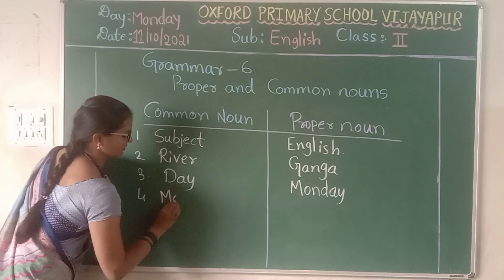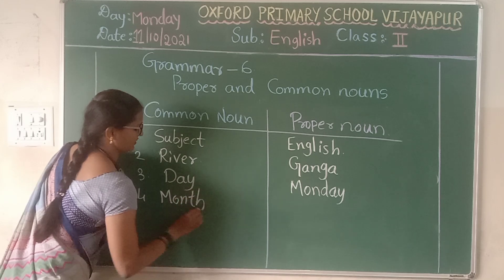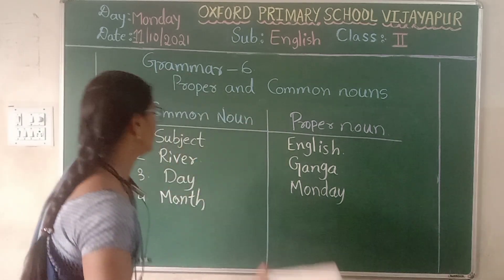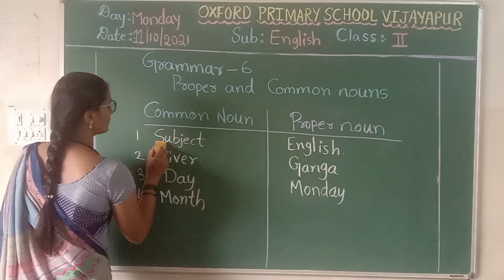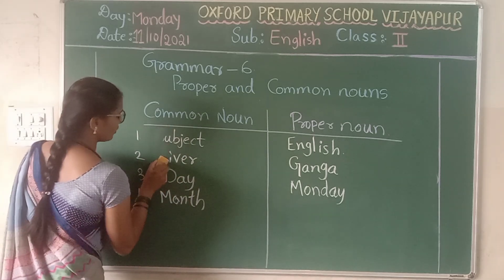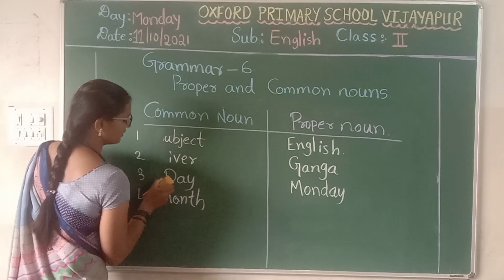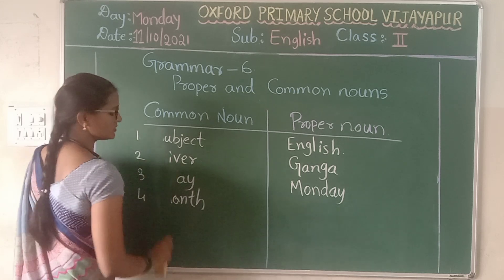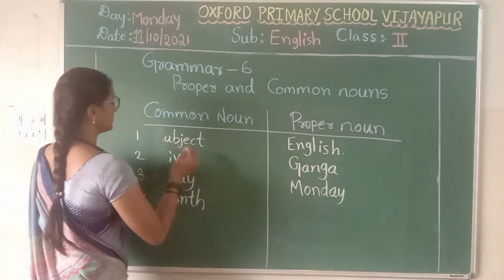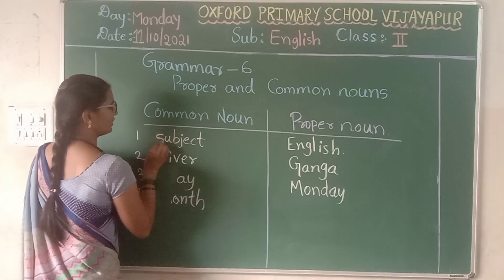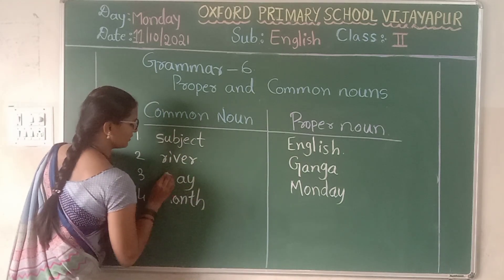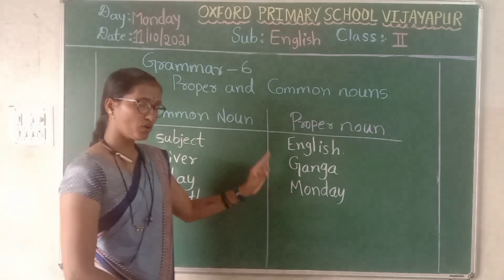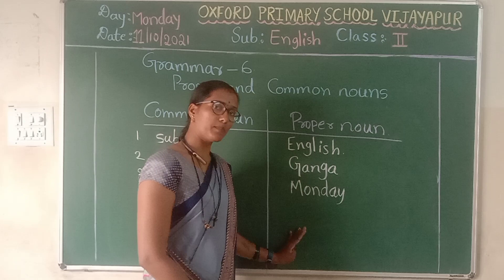Let us say 'month.' Now, all these common noun words start with small letters — don't get confused. Proper nouns always begin with a capital letter. But common nouns are not proper nouns, so we write them in small letters.